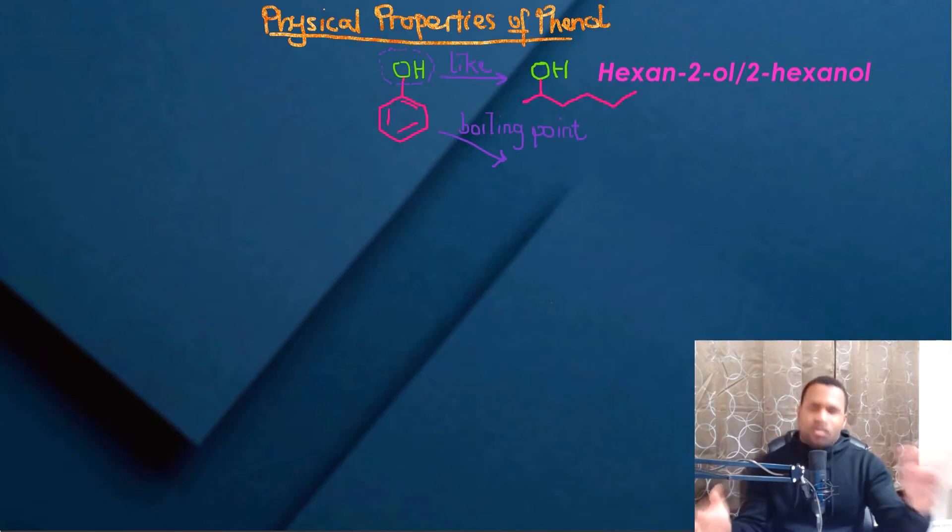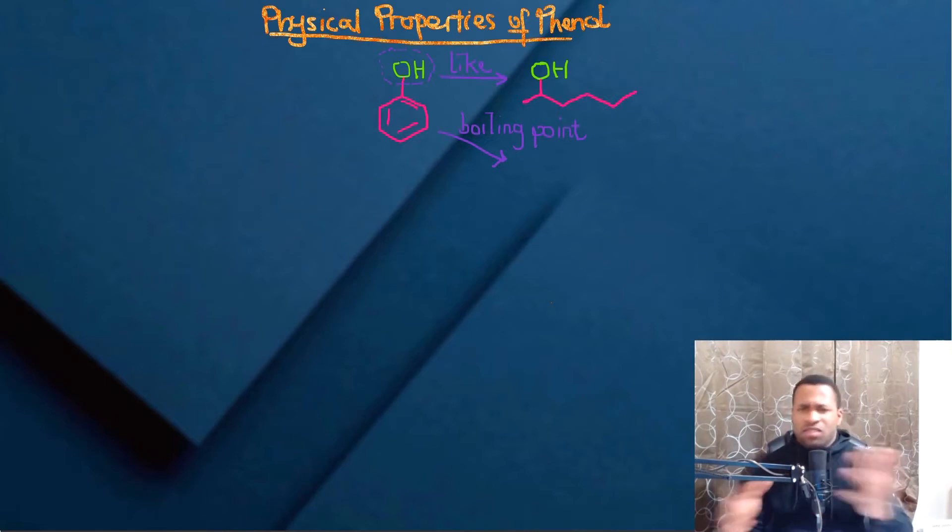Moving into this particular video, we're going to be looking at the physical properties of phenols. Looking at phenols, we see that this compound has the hydroxyl group attached to benzene, which is quite similar to alcohols. In this case for consistency, the carbon chain is six and we notice the hydroxyl is attached to carbon number two, so it's called hexane-2-ol.